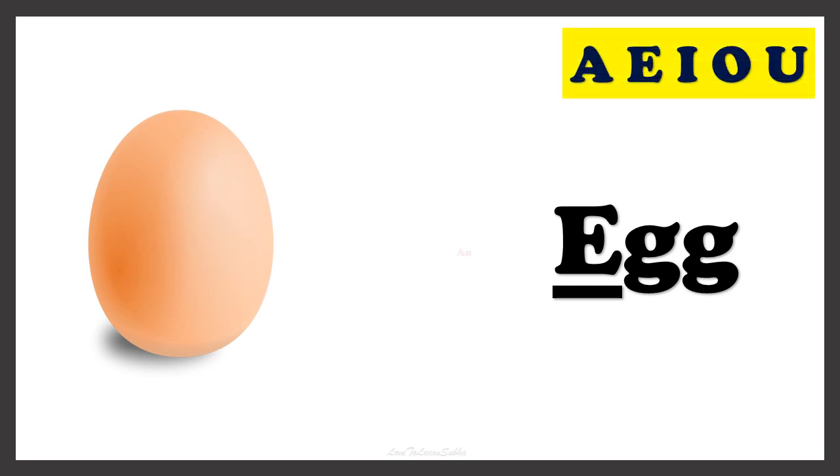Can you guess this picture? Yes, this is EGG. Now we have to find the article that needs to be placed before the word EGG. We have to find the first letter of the word. The word EGG starts with the letter E, which is a vowel. So whenever a word starts with a vowel, we use the article AN. So this is AN EGG.